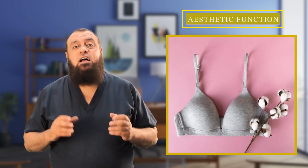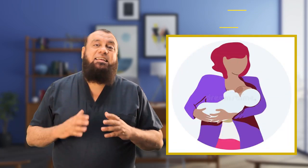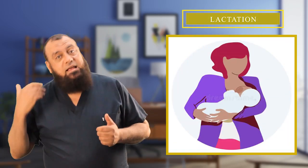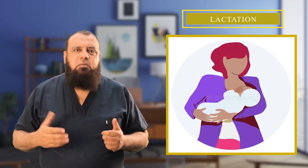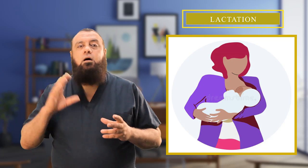The breast has two main functions. The first is an aesthetic function — it is a symbol of femininity, under control of the estrogen hormone that allows enlargement of the breast. The second function is secretion and ejection of milk, known as the lactating function. Hence the prefix 'mammo' as in mammoplasty, mamotome, and mammography.